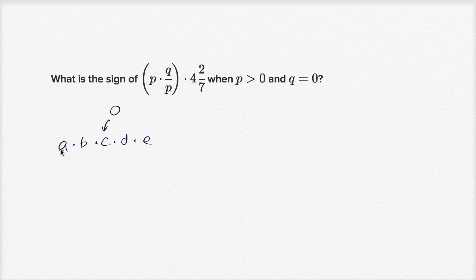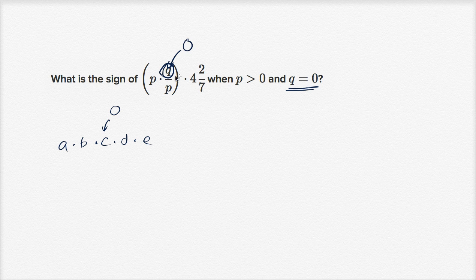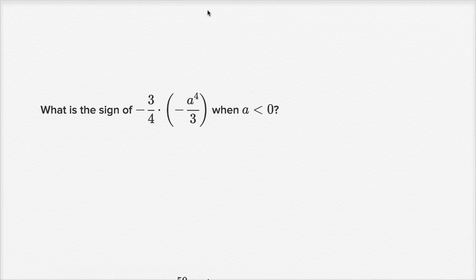Notice that q is equal to zero, and q appears right in this expression. I could take p divided by p — that's one — times q, which is zero, giving us one times zero equals zero. Then zero times 4 and two-sevenths is just zero. At some point you're multiplying the entire product times zero, so the whole product is going to be zero. This sign is neither positive nor negative — it's zero.